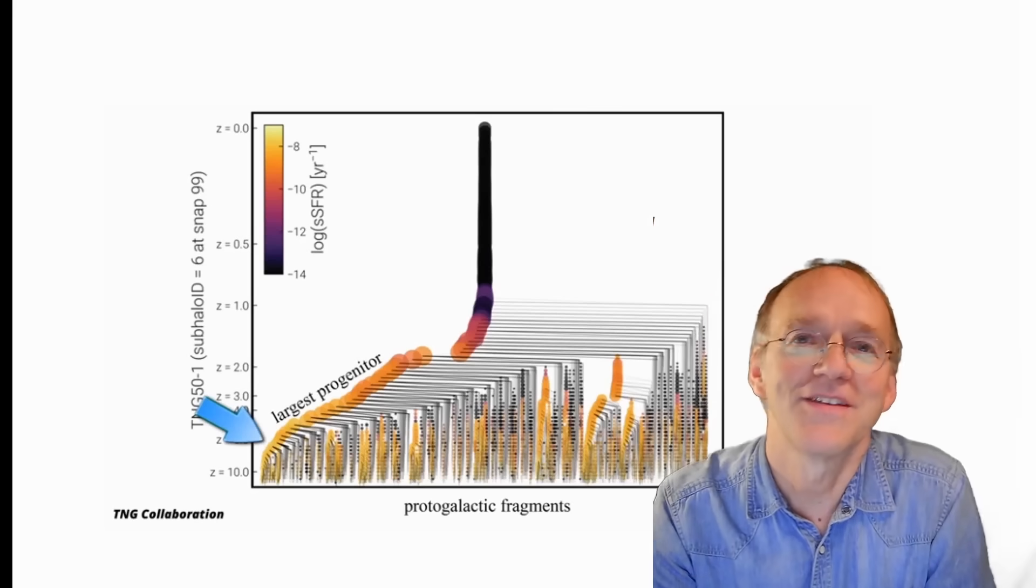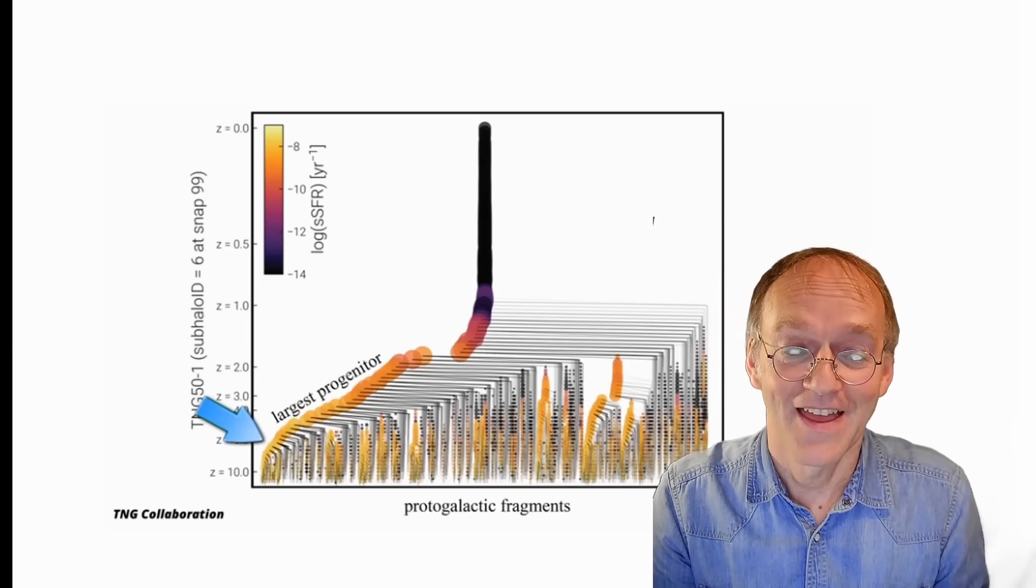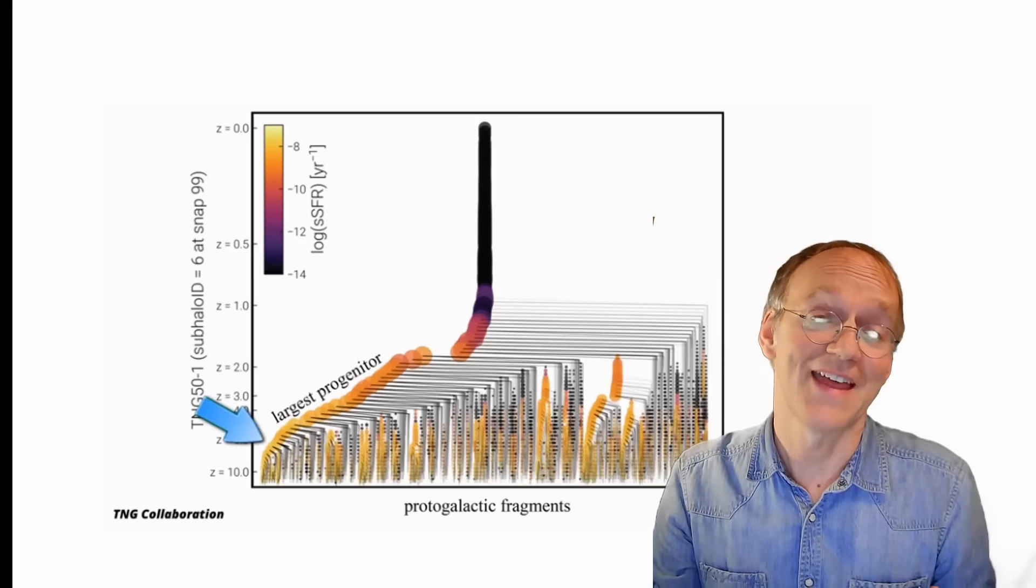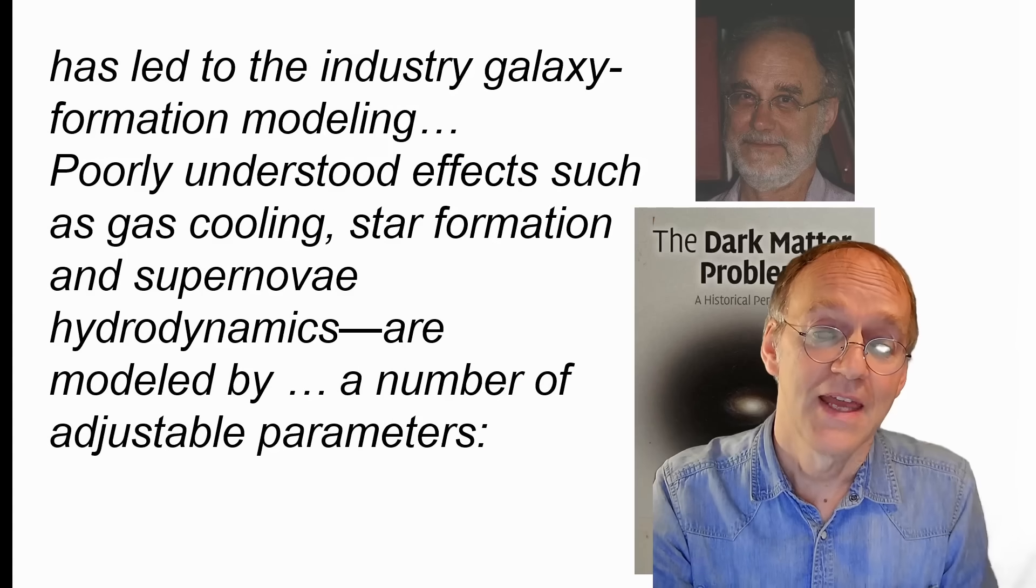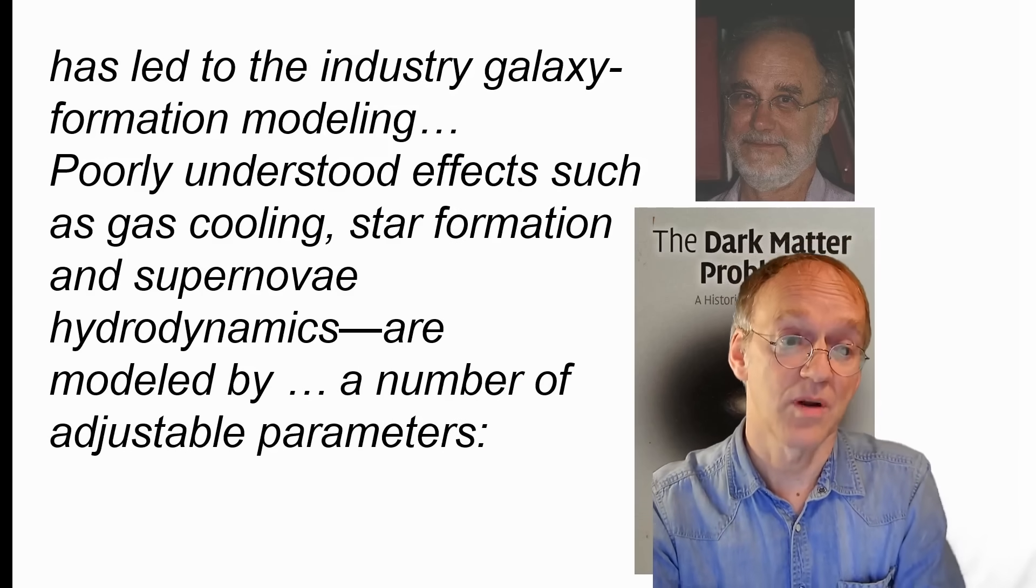They show the gradual build-up of galaxies mostly from the mergers of, here it comes, dark matter halos. Yeah, these models look very scientific, but once you realize that all this is at the very end theoretically fantasy, you don't appreciate it that much any longer. Now let's see what a real expert on galactic dynamics, Robert Sanders, says in his excellent book The Dark Matter Problem.